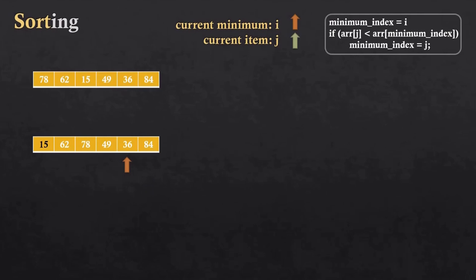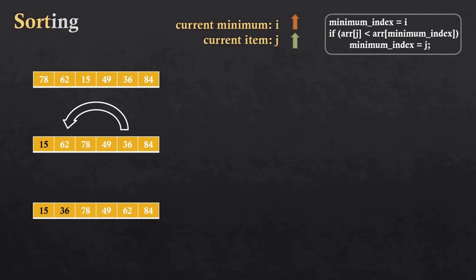So 36 will be swapped with the second index. After the second iteration the new array is: 15, 36, 78, 49, 62, and 84.